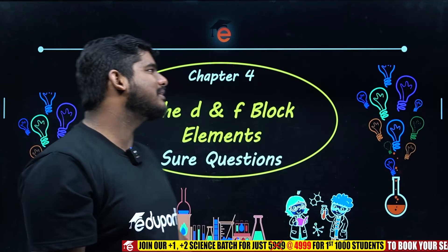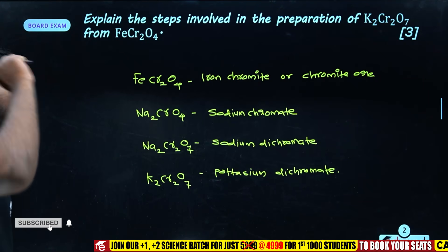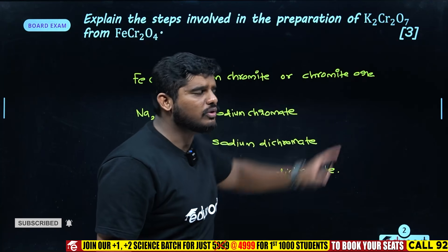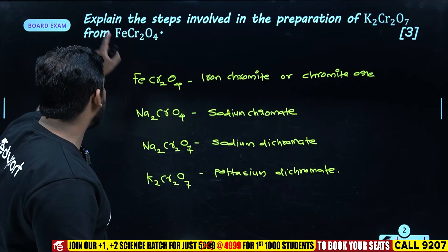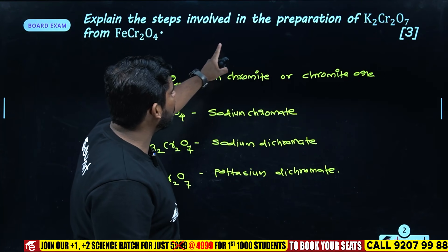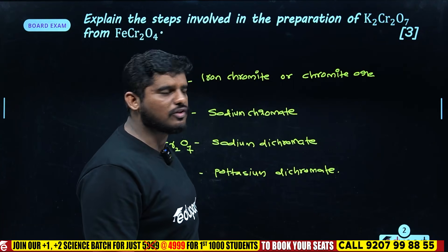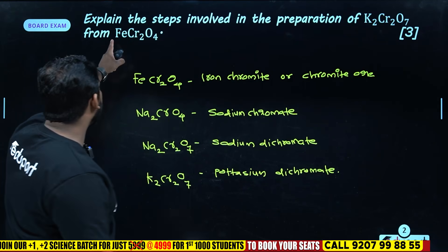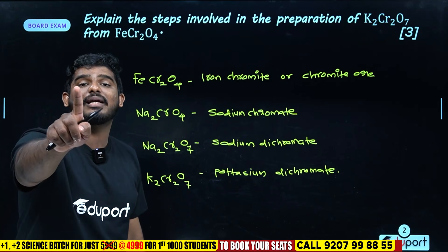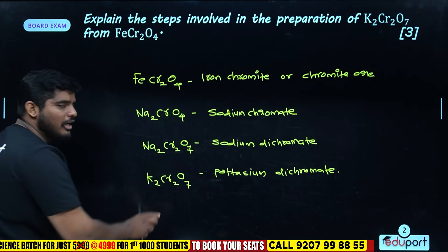So let's start with the first question, which is a very important question: why can we explain the steps involved in the preparation of potassium dichromate from FeCr2O4? That is the formula for us to take these formulas.